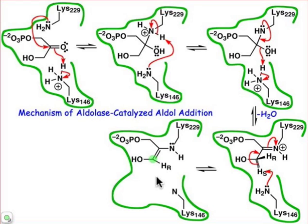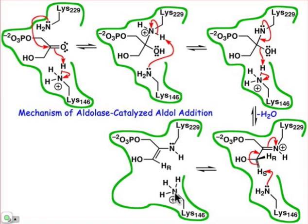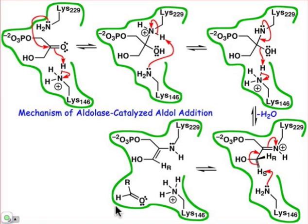We've created that nucleophilic carbon as the enamine, and lysine 146 is now able to serve as a general acid because it's protonated. At this point, we're ready to position the aldehyde and make the new carbon-carbon bond. The aldehyde is going to be positioned so that its psi face is in the right orientation. Basically, if you imagine these are two planes — the enamine up here and the aldehyde down here — these two planes are going to come together to make that new carbon-carbon bond, with the psi face of the aldehyde as the key face.